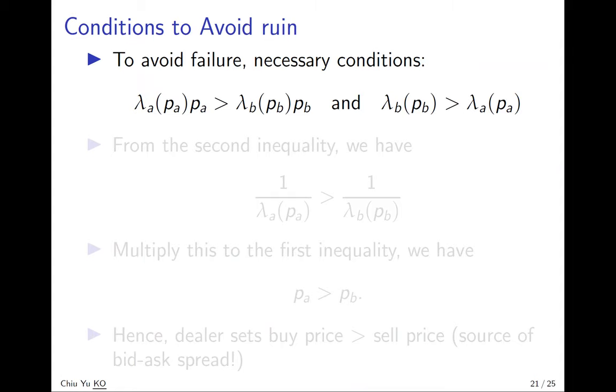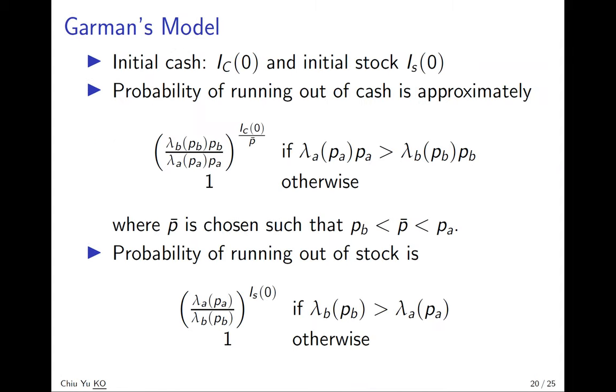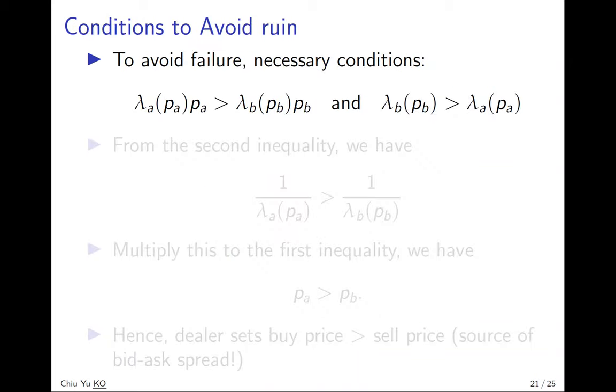So in order to avoid ruin, we must make sure that these two conditions are satisfied. It's lambda A P A bigger than lambda B P B, and remember all these values are positive, so you can swap the second inequality. You can swap them because they are all positive, or divide both sides by lambda B.